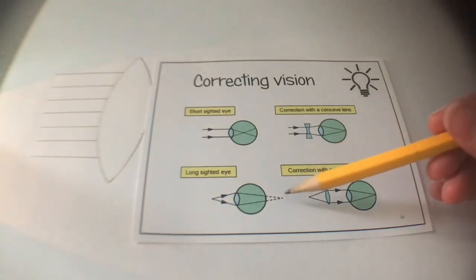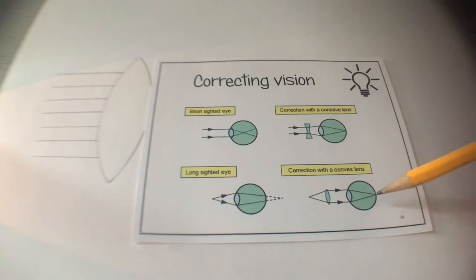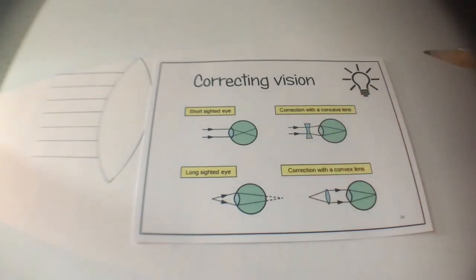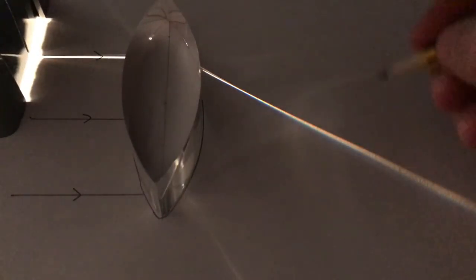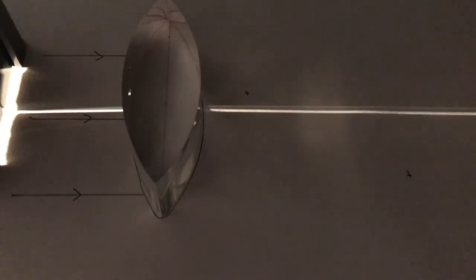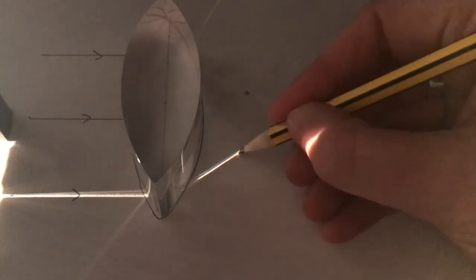Now we're looking at correcting long-sighted vision. As you can see from this picture, the focal length is too long - it goes beyond the eyeball - and we need to bring that focal point back so it hits the retina. Someone who is long-sighted has a long focal length, and it's corrected with a convex lens. I've drawn around my convex lens, drawn three rays of light going in with arrows showing the direction, and I'll put the slit in to create a single ray of light, placing the convex lens in position.